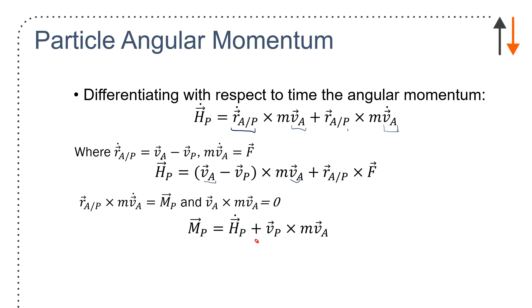If I look at this, I can say r_a with respect to p cross with m v dot a is really a moment, a moment about p. And two parallel vectors, v_a, v_a, are going to equal zero. So this term will go away. And I end up with moments about p equals h_p dot, the angular momentum, plus v_p crossed with m v_a. This looks a lot like our force equation.